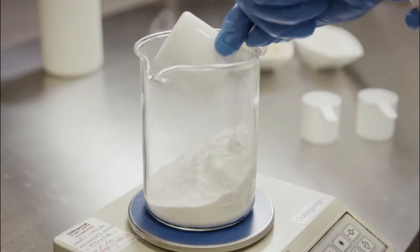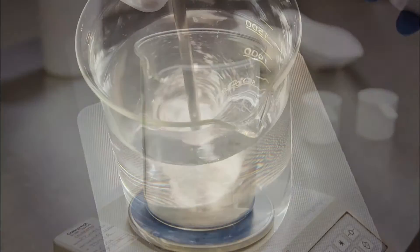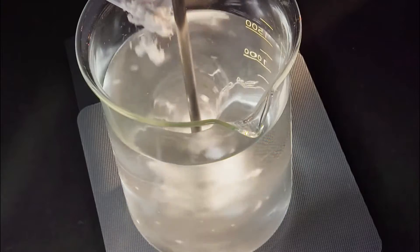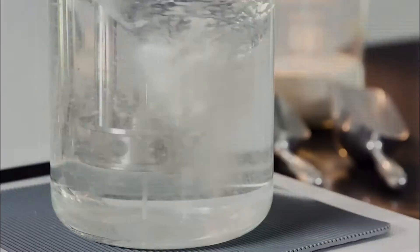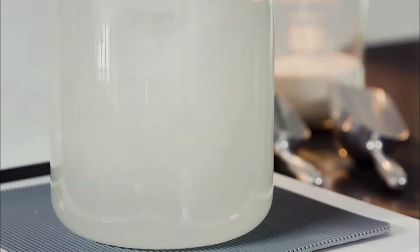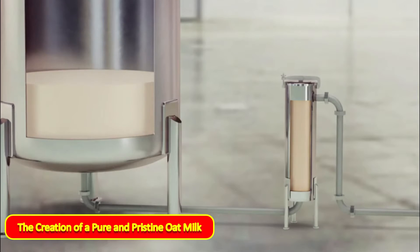Once sorted, the oats undergo a rigorous cleansing ritual, where they are gently bathed in purified water and meticulously scrubbed to remove any impurities or foreign matter. This purifying process not only safeguards the integrity of the oats, but also lays the foundation for the creation of a pure and pristine oat milk.